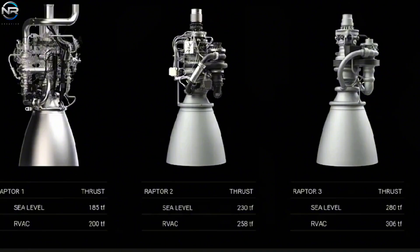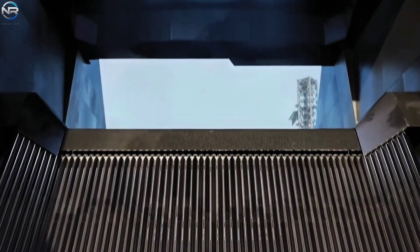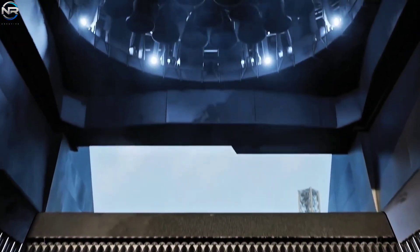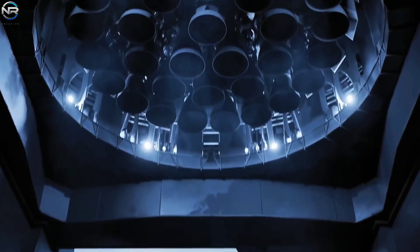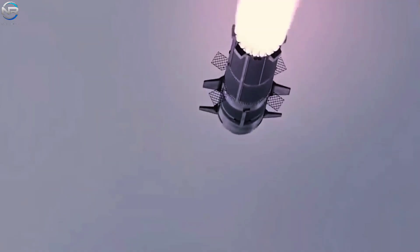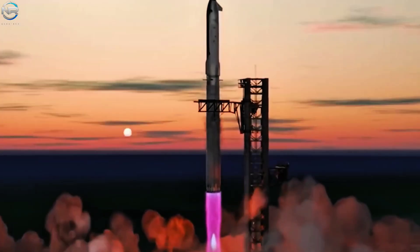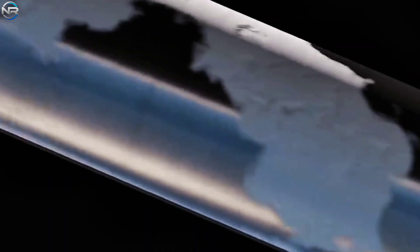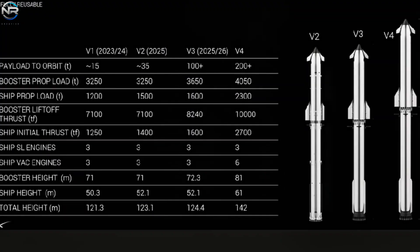One of the most significant improvements is its power. The Raptor 3 is expected to produce 280 tons of thrust at sea level and 306 tons in a vacuum. With this achievement, it stands out as the most formidable methalox engine worldwide, outshining Blue Origin's BE-4. However, the true capability of Raptor 3 lies not just in the power of an individual engine, but in the way SpaceX effectively combines numerous engines.